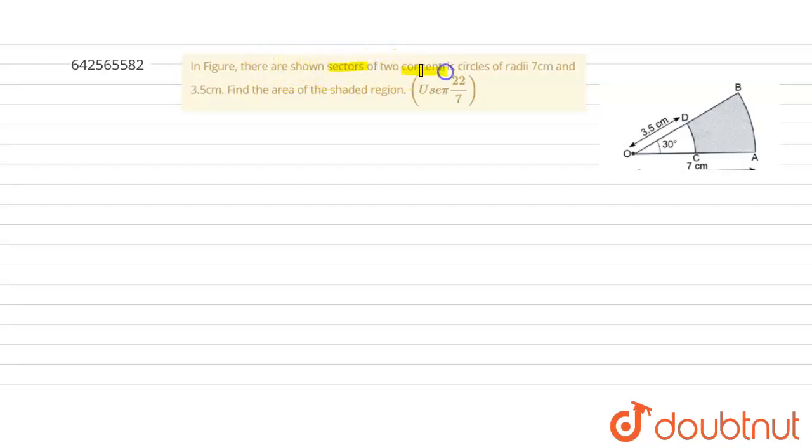It has radius of 7 centimeter and 3.5 centimeter. We need to find the area of the shaded region, that is ACDB. We need to find this area.